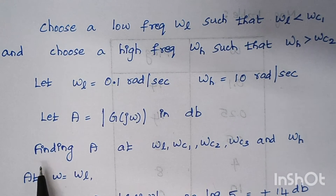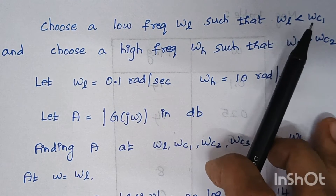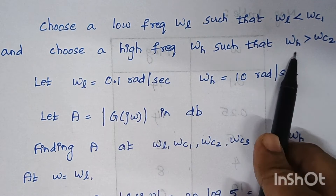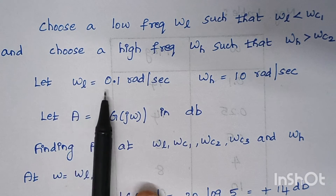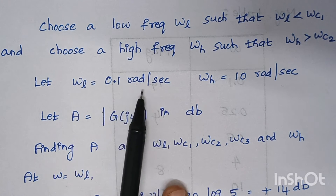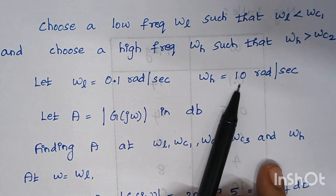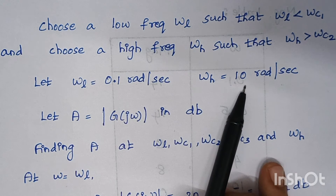Next we select a low frequency ωl such that ωl < ωc1, and a high frequency ωh such that ωh > ωc2. Since ωc1 = 0.25, we choose ωl = 0.1. Since the maximum corner frequency is 4, we choose ωh = 10, though you can also choose 50 or 100 — there is no restriction.